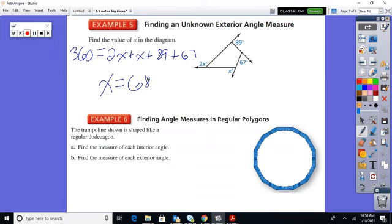Example six, finding angle measures in regular polygons. Ah, regular. So this makes it nice. Trampoline shown is shaped like a regular dodecagon. So dodeca is 12. Don't worry on a quiz. I'll make sure you know how many sides your thing has. You don't have to memorize that stuff.